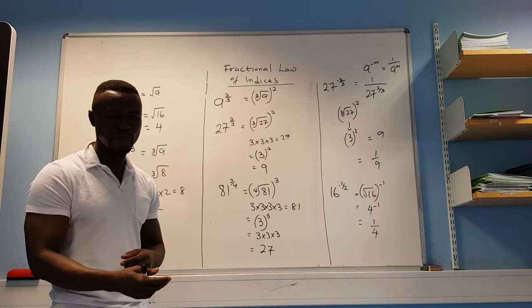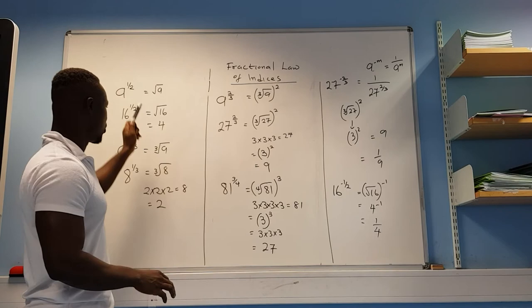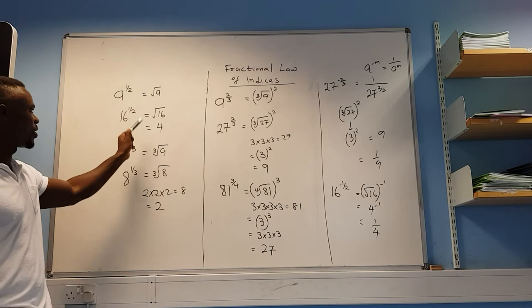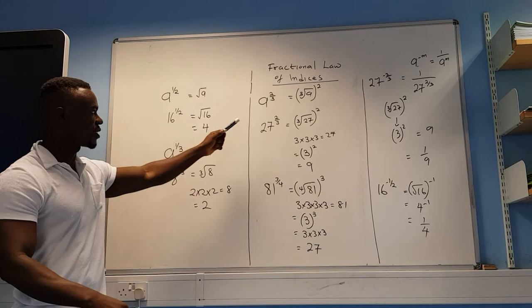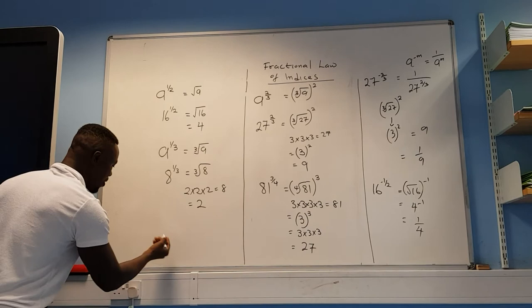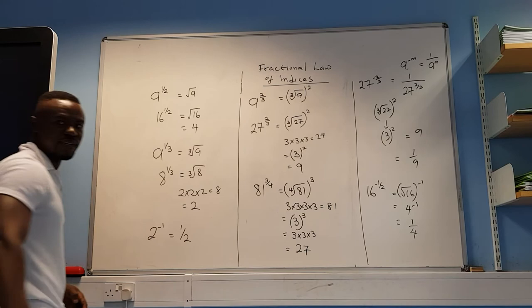Nothing changes — it's the same method, the same process. Remember, this always comes up in foundation exams and people often get it wrong. Any number to the power of a half does not mean times by a half; it means the square root. Any number to the power of zero equals one. For the negative power law, for example, 2 to the power of minus 1 just means 1 over 2, which is a half.